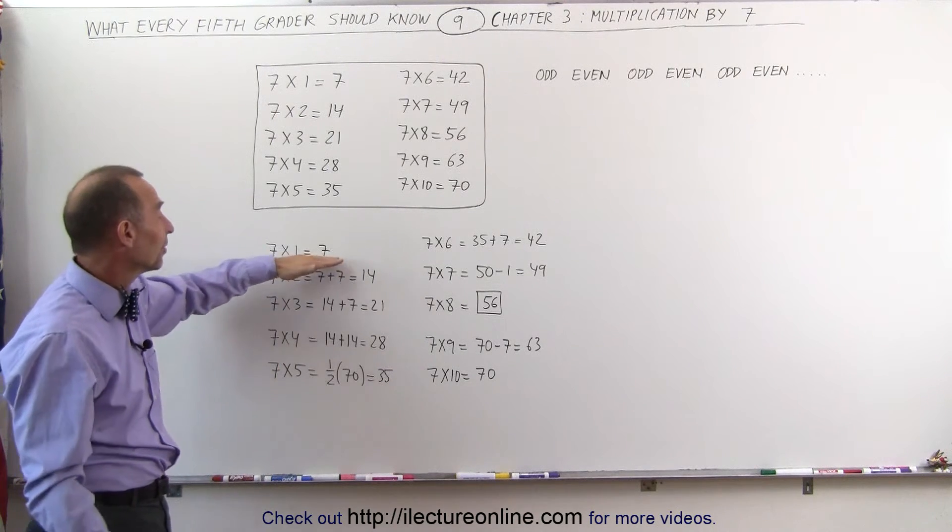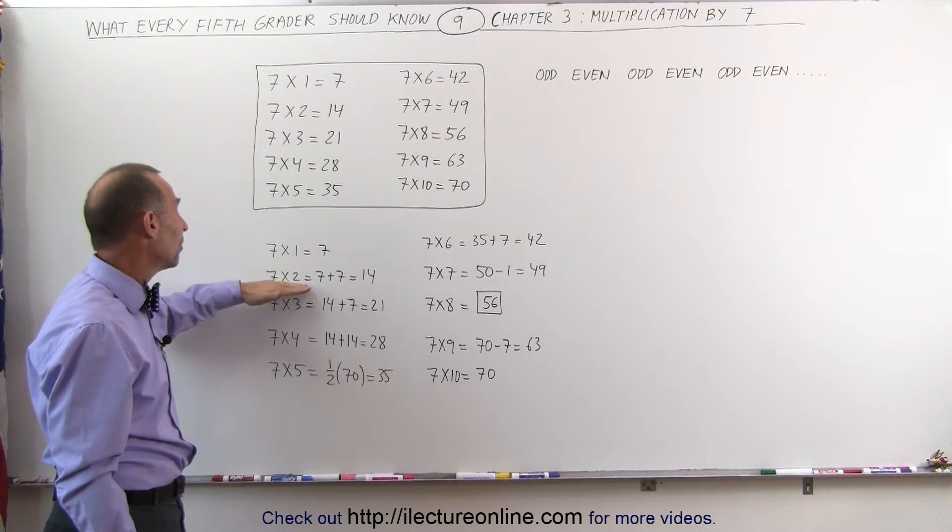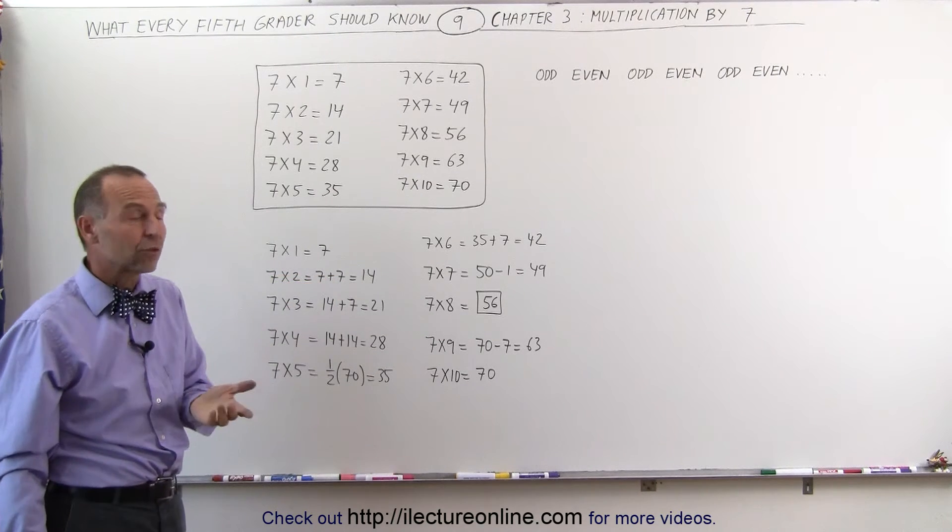7 times 1, that's easy enough, that's simply 7. And 7 times 2 simply means we have two 7s, and therefore that's 14.